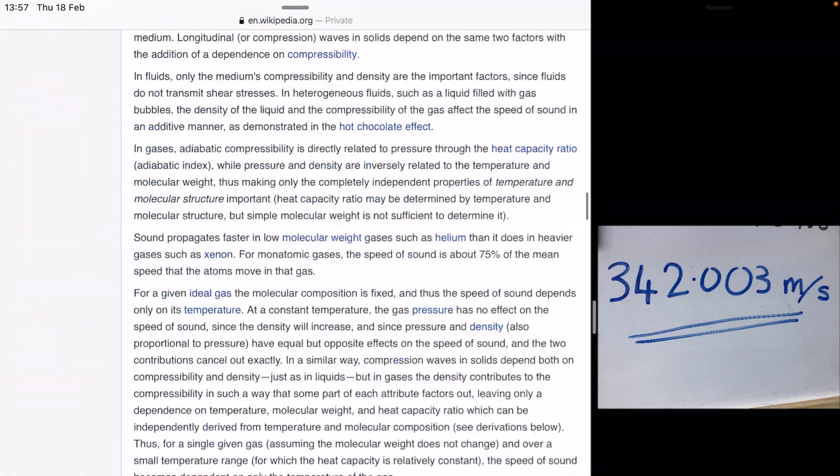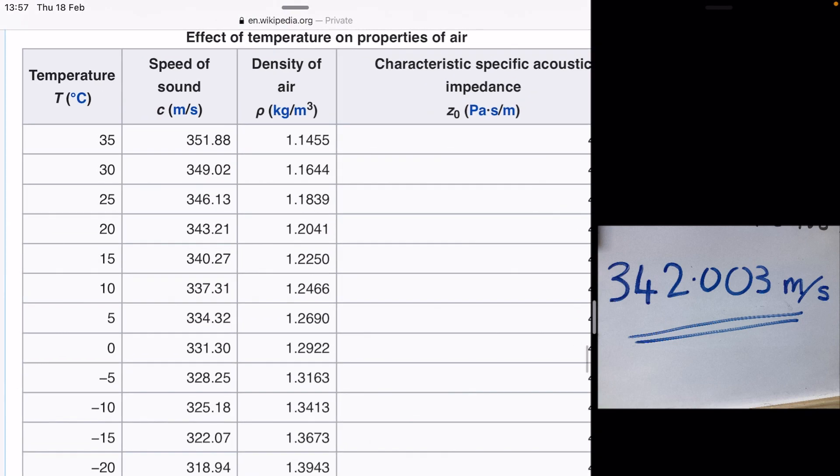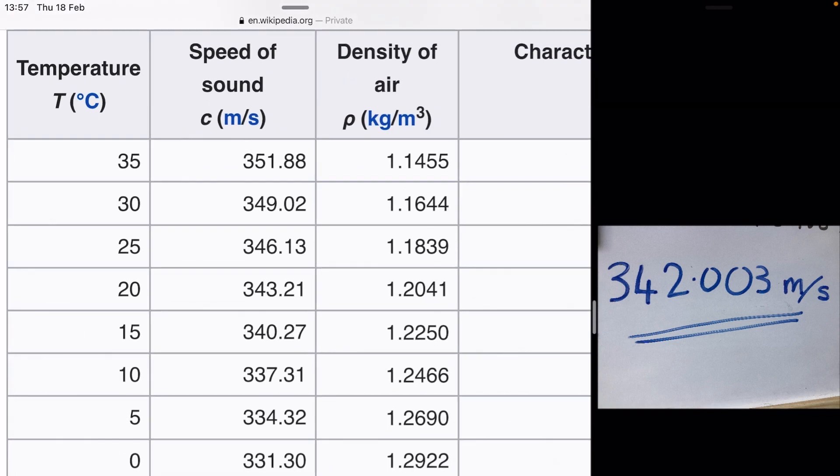And if we scroll down, we'll come across this table here. And you can see that the temperature affects the speed of sound. So as the temperature varies, the speed of sound varies. When we measured the speed of sound in our lounge, the temperature was about 18 degrees. So on the table we should be between 15 and 20 degrees Celsius. So the speed of sound should be between 340 and 343 metres per second. So our results are pretty accurate.